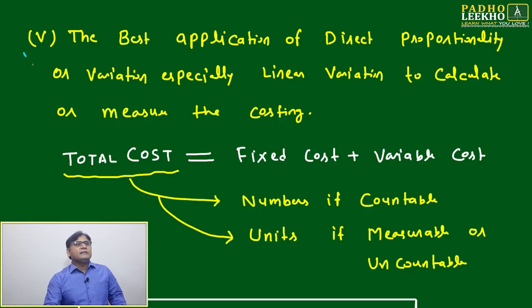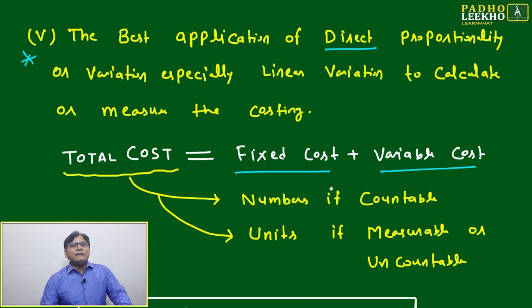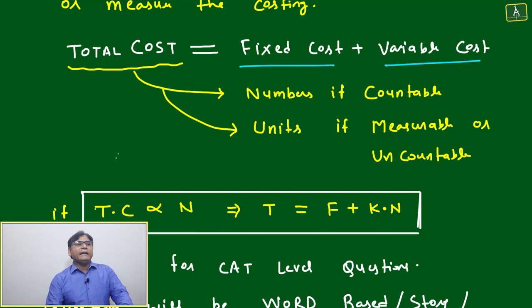Welcome to the next point. From an application point of view, this is very important because this is one of the best applications of direct proportionality. Here, we mix total cost equal to fixed cost plus variable cost. You can say it is a second format, whatever was there: A equal to K1B plus K2.